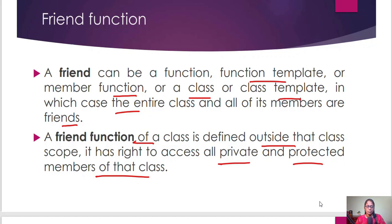A friend can be a function, function template, member function, a class, or a class template — in which case the entire class and all of its members are friends. A friend function of a class is defined outside the class scope. I am defining a function outside the class, but I need that function to access the member data of a particular class. I can define that function as a friend function.